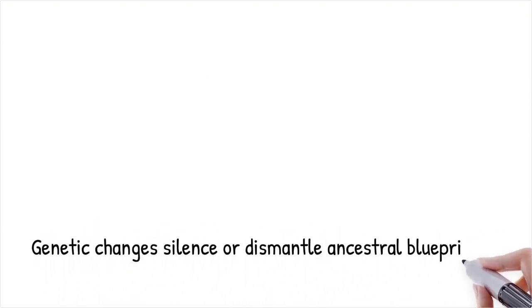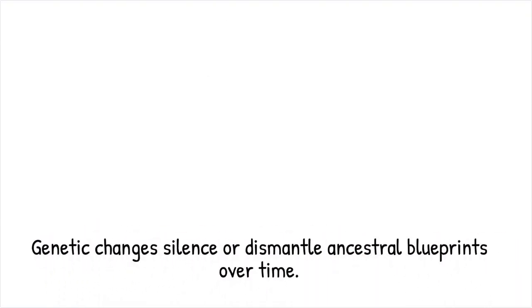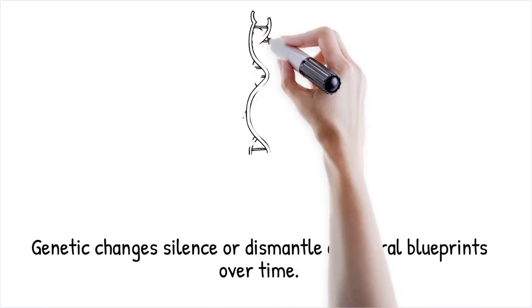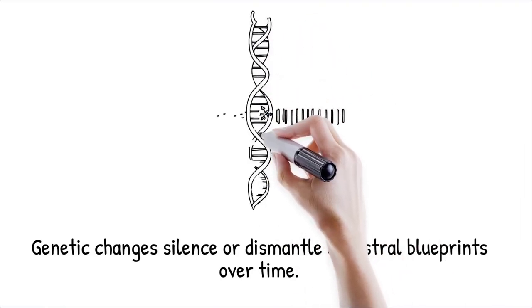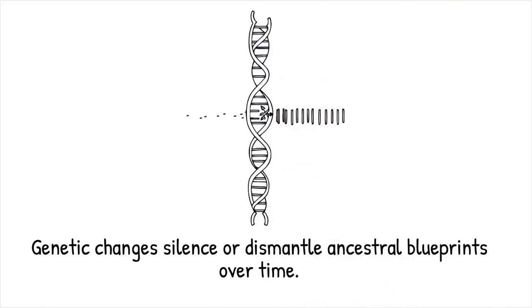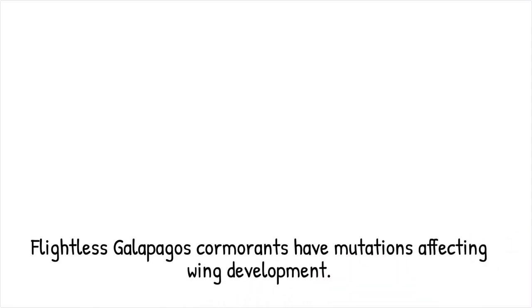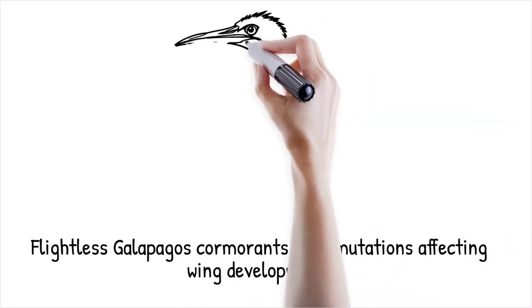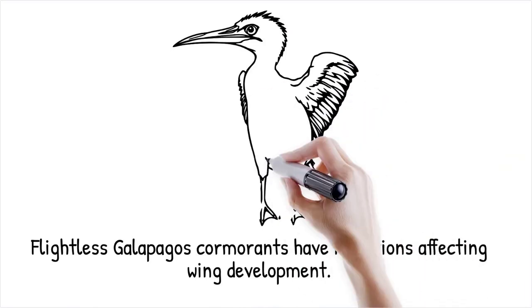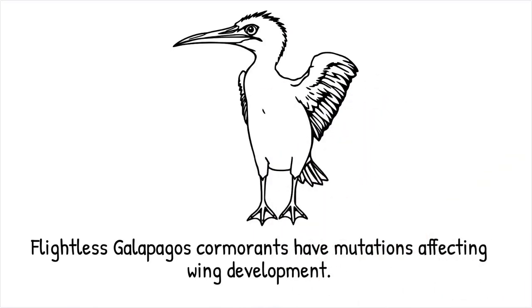These genetic and epigenetic alterations accumulate neutrally when the trait becomes costly or unnecessary, and the blueprint for ancestral features may be silenced or dismantled over time. Flightless island birds like the Galápagos cormorant harbor mutations in bone and feather genes needed for wing development — like commenting out lines of code that implement a feature, rendering it non-functional even though remnants remain in the codebase.